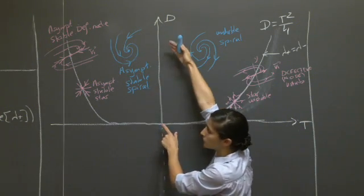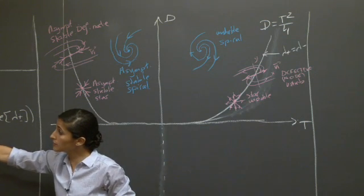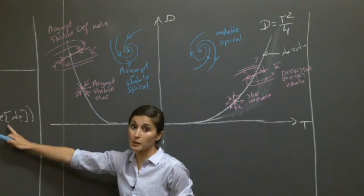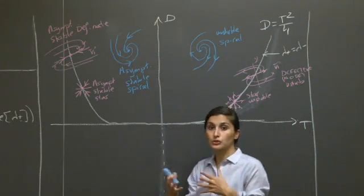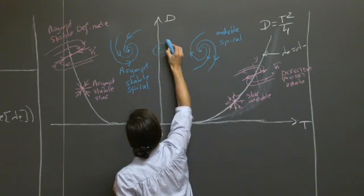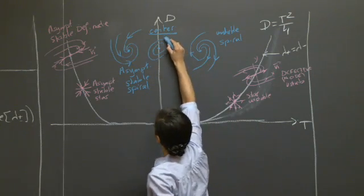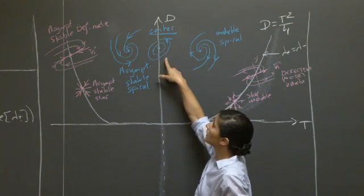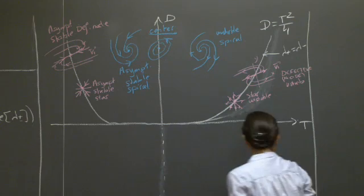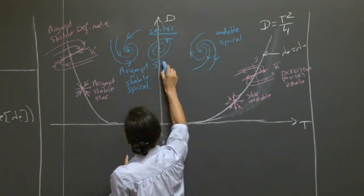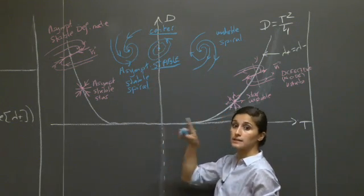When the trace equals zero while still above the parabola, the eigenvalues are purely imaginary — no real part. This gives pure oscillation, corresponding to closed trajectories (circles or ellipses) in phase space. This is called a center. The stability here is simply stable — not asymptotically stable — because solutions stay near the critical point but never actually reach it.